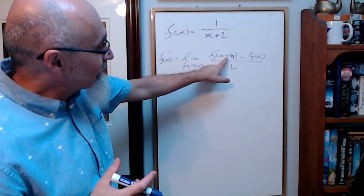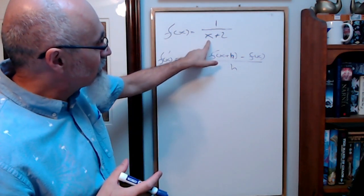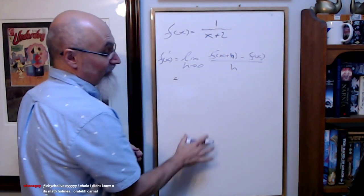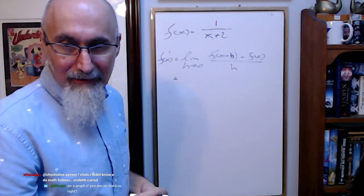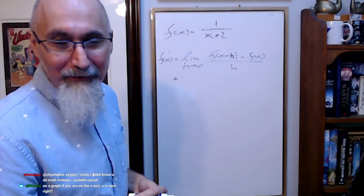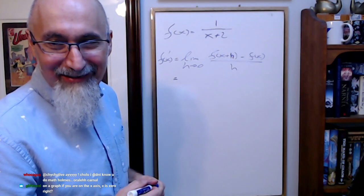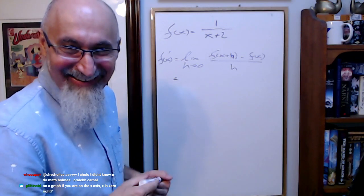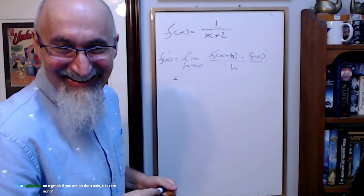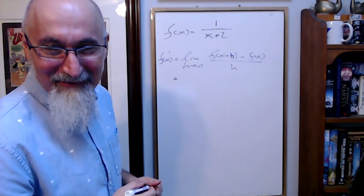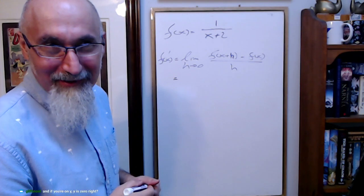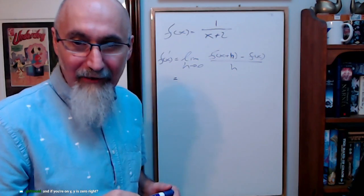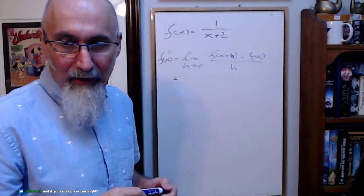So f of x plus h just means substitute x plus h in for x. What we're going to do — hopefully I have enough room because this gets messy. On a graph, if you are on the x-axis, y is zero — not x is zero, y is zero.